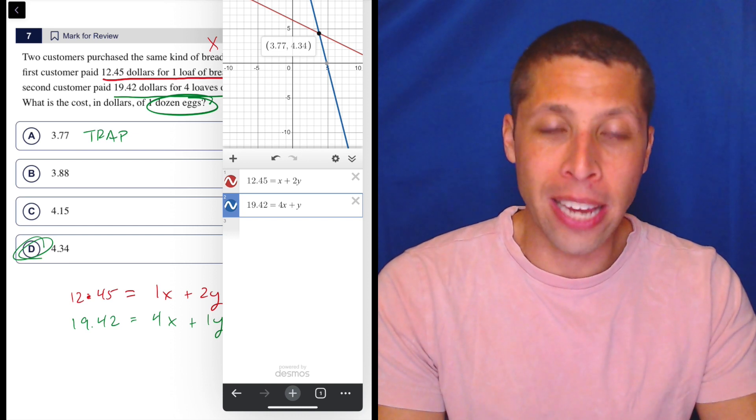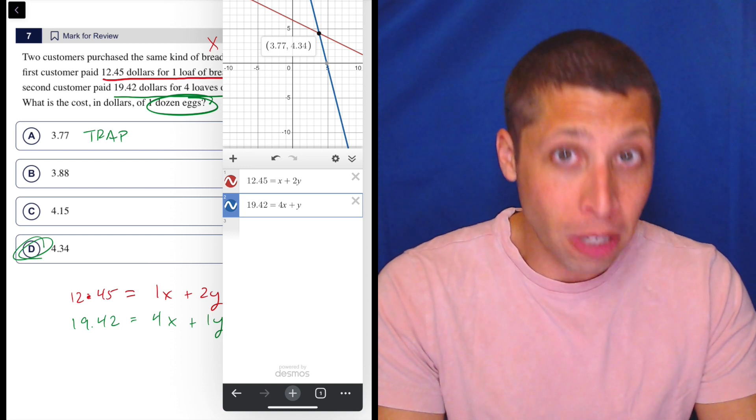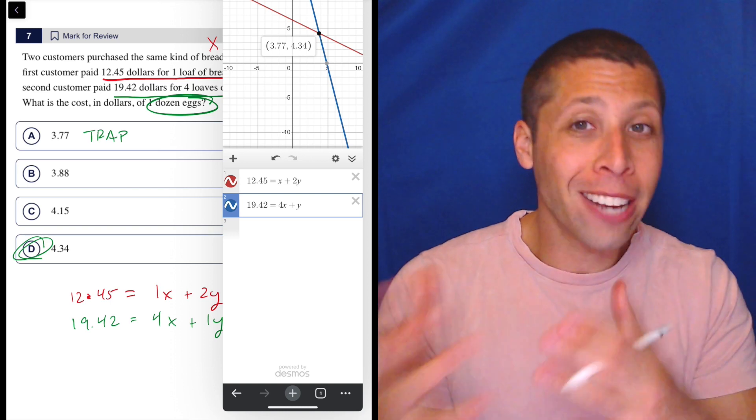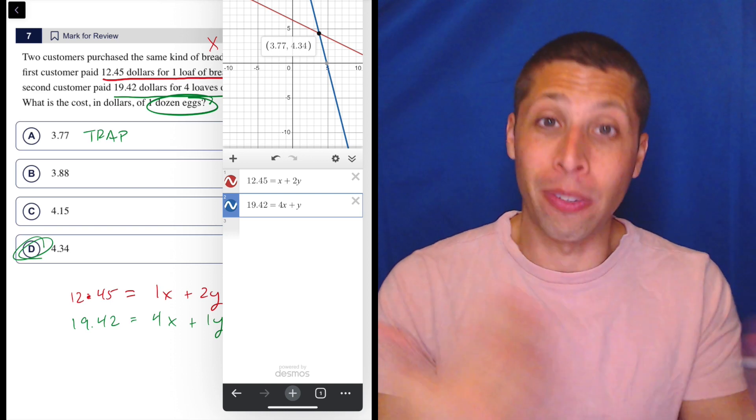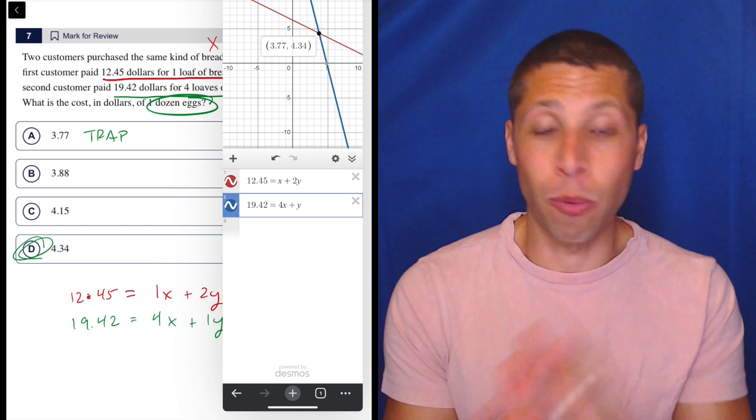This goes for any situation where we have a system of equations, but it's especially important in a story because the X and the Y are all about us, right? We could have flipped them, and we still would get the same answer, but we've got to be really clear that X is one thing, Y is another.